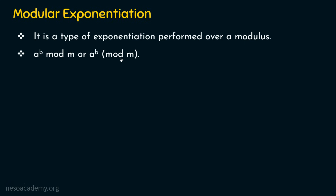Please note: the reason we use brackets is that mod m is not for b alone — it's for a power b, for the whole term. We have mod m, and that's why, in order to avoid confusion, we use brackets. So whenever it is a power b mod m, it means mod m applies to a power b only, not simply to b.